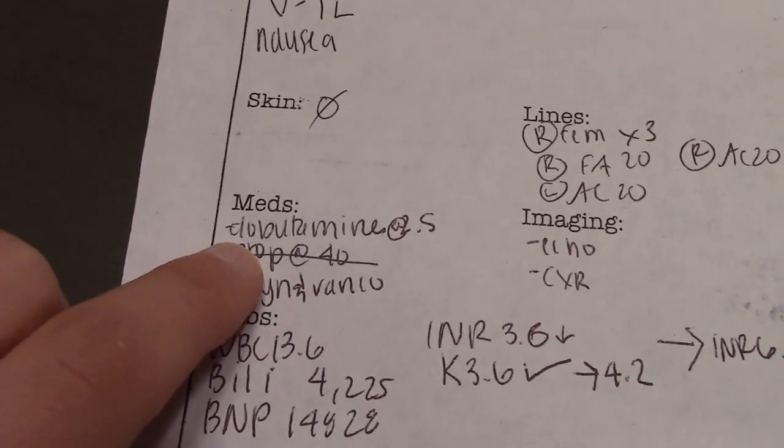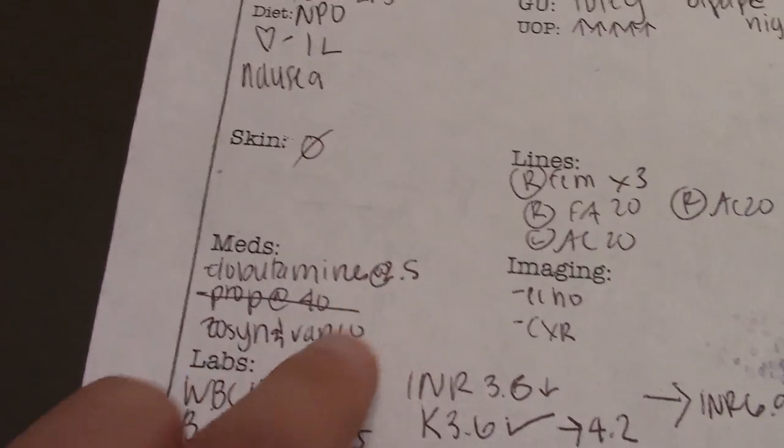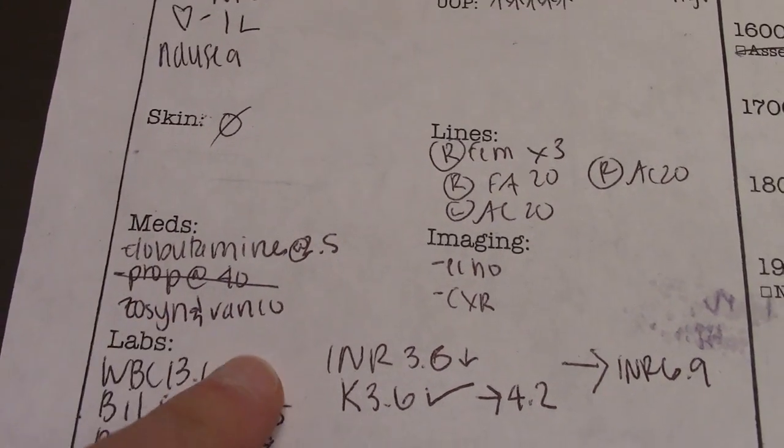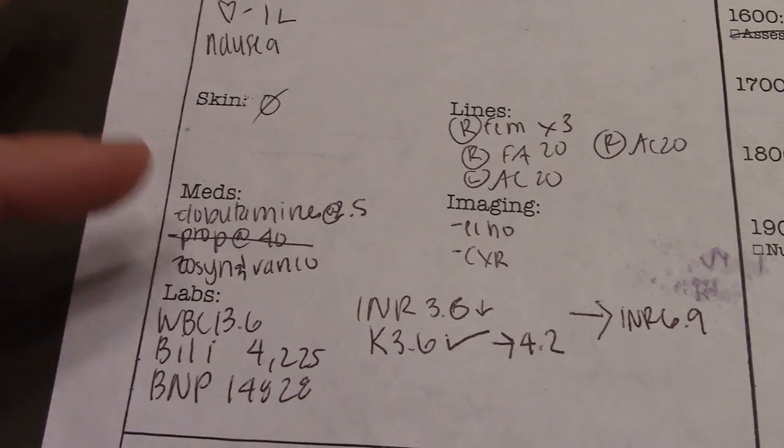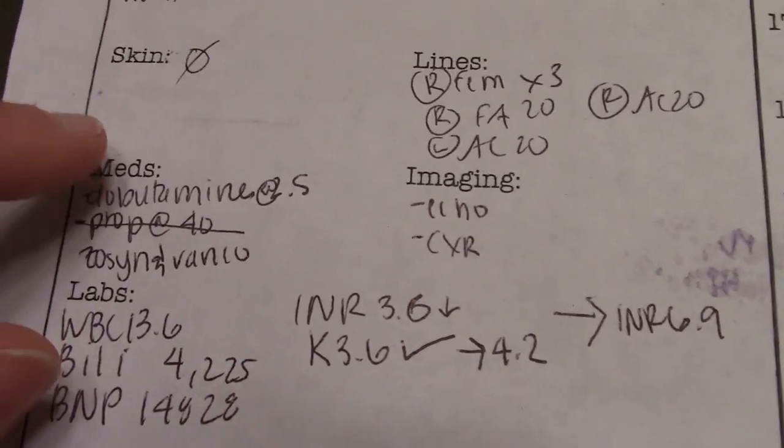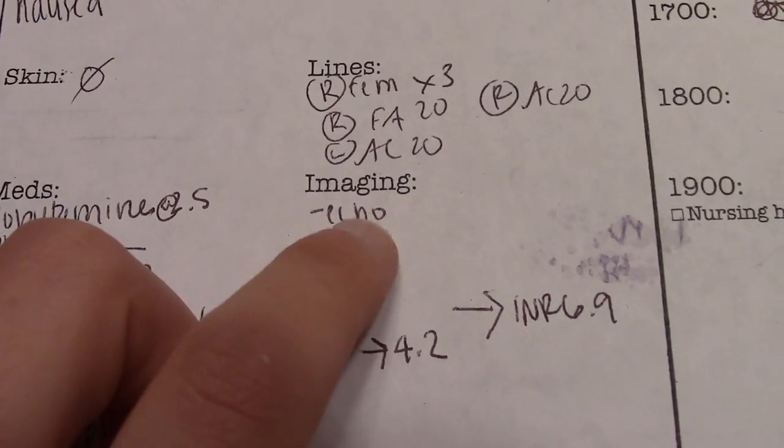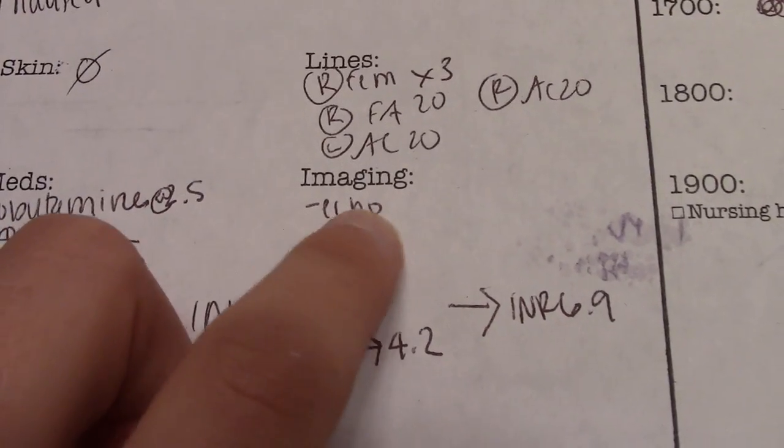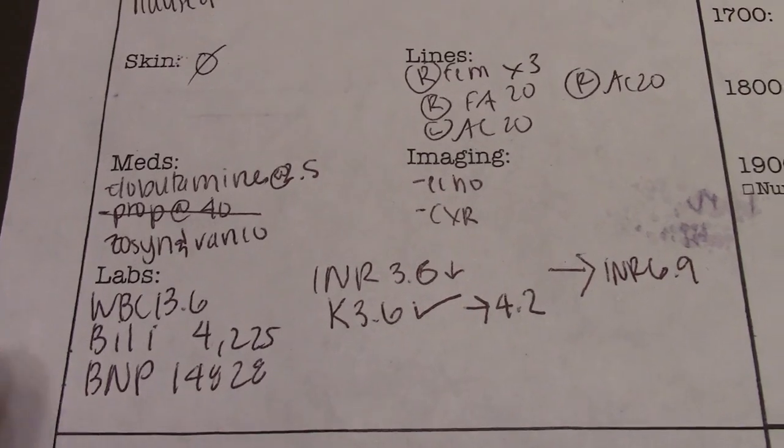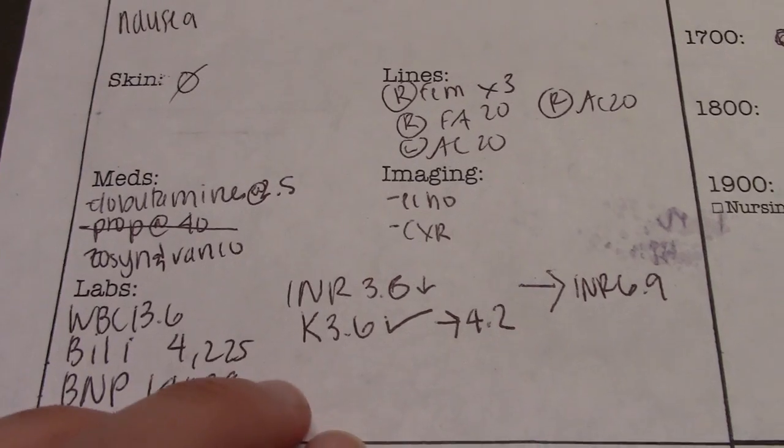Meds: this patient was on a dobutamine drip at 2.5 mics. They were on propofol at 40 but crossed that off, and they were getting Zosyn and Vanco for antibiotics. This is where I put drips or pertinent meds. I don't put scheduled meds unless it's important for some reason. Imaging: these were things they had. Usually I'll write in results, but I didn't for this. Then I put labs down here.